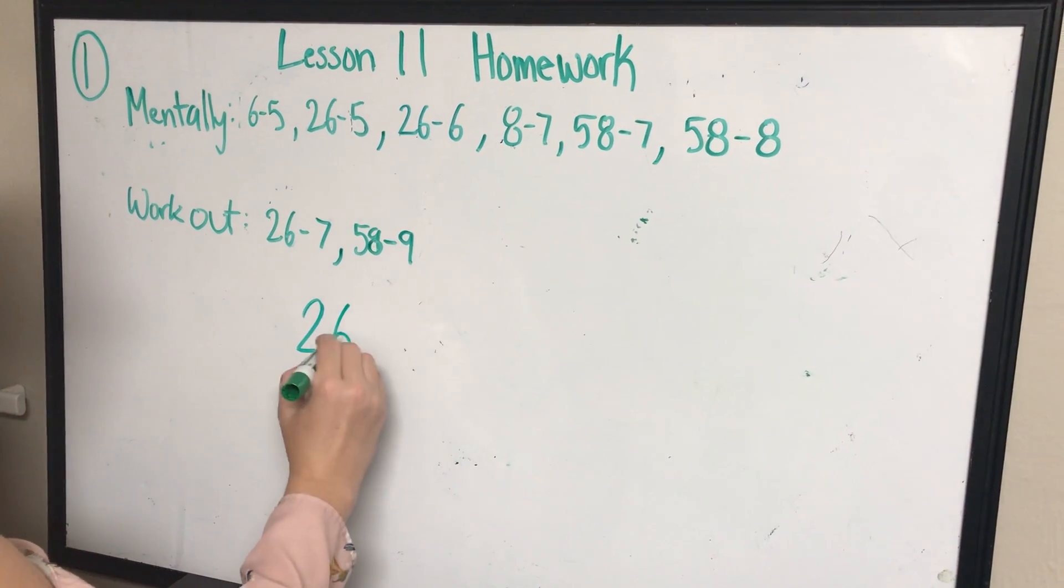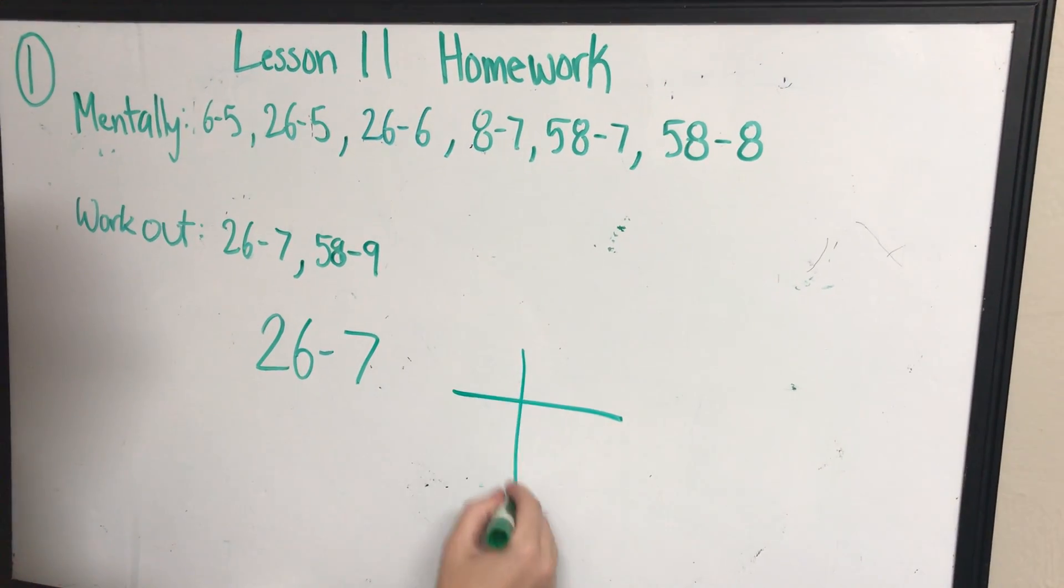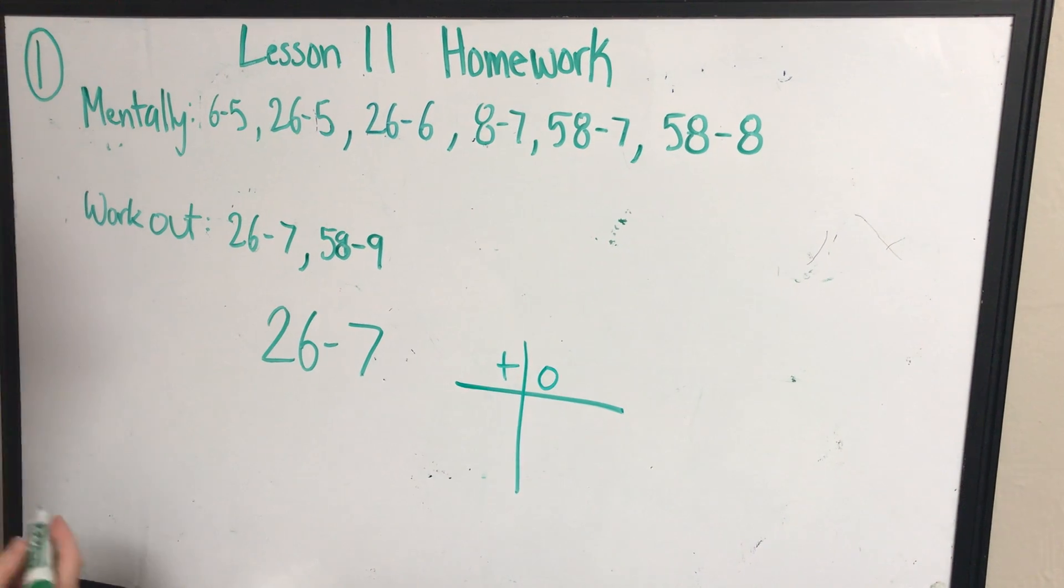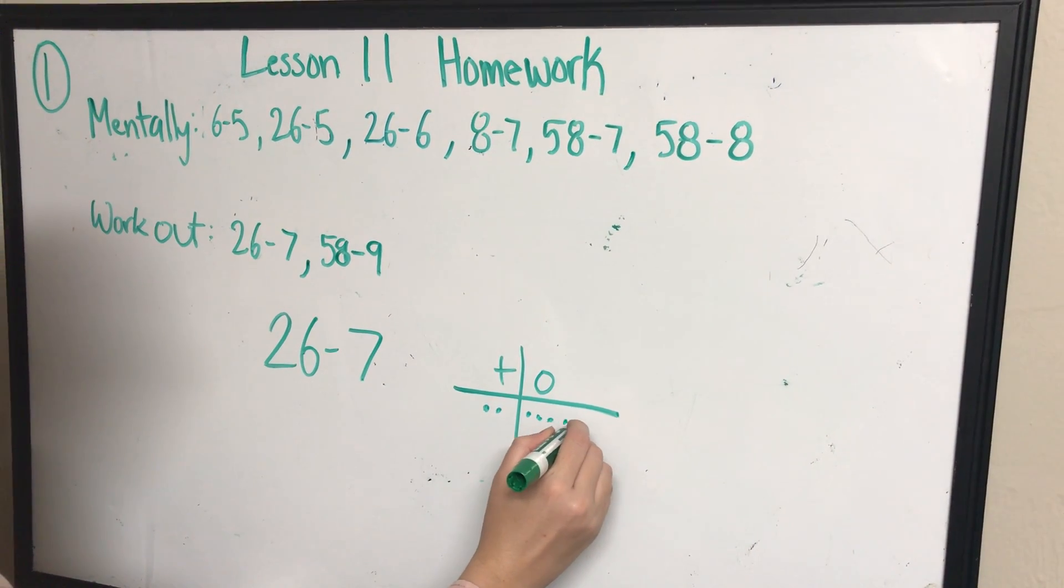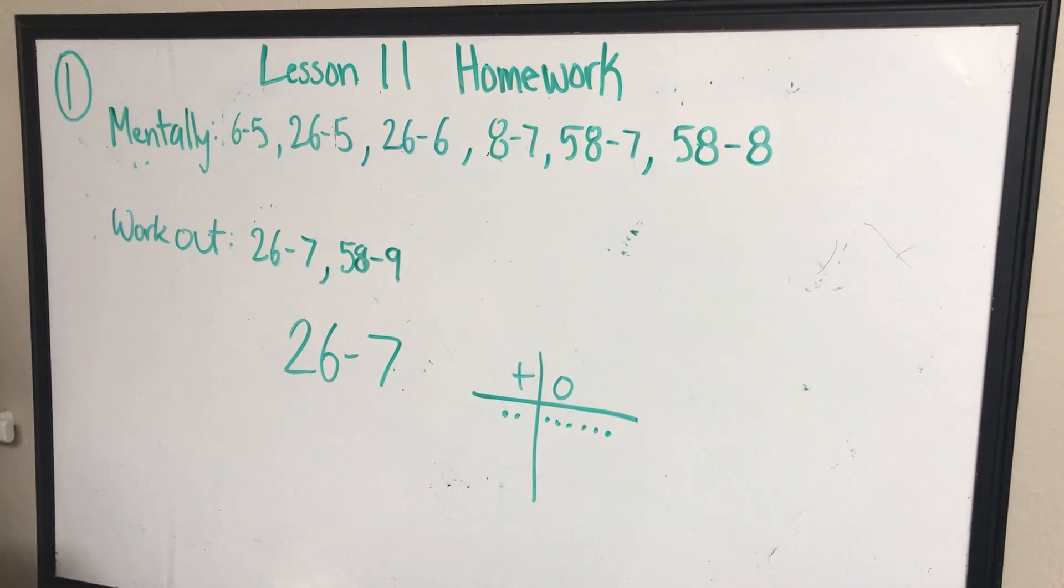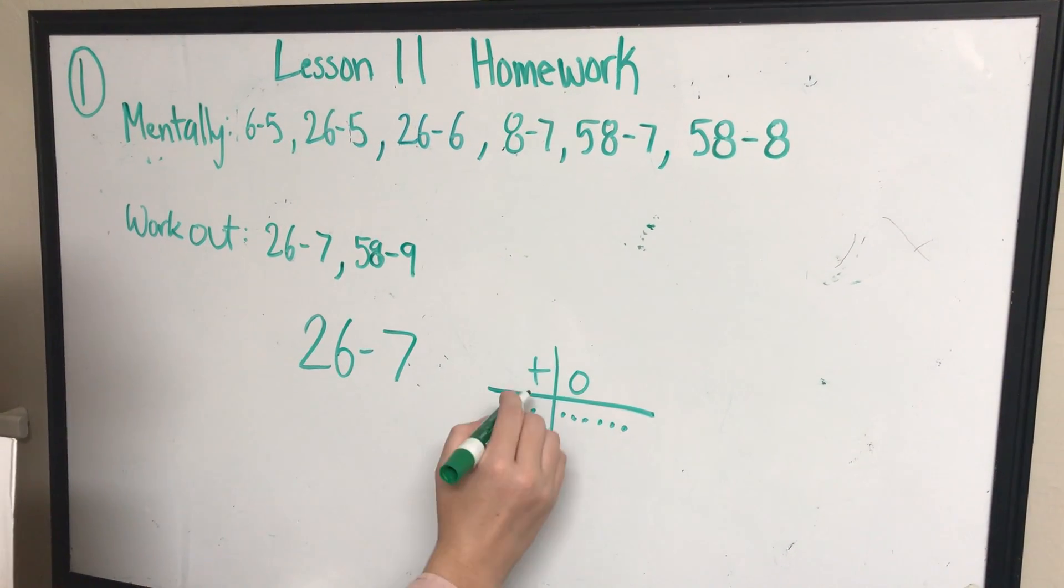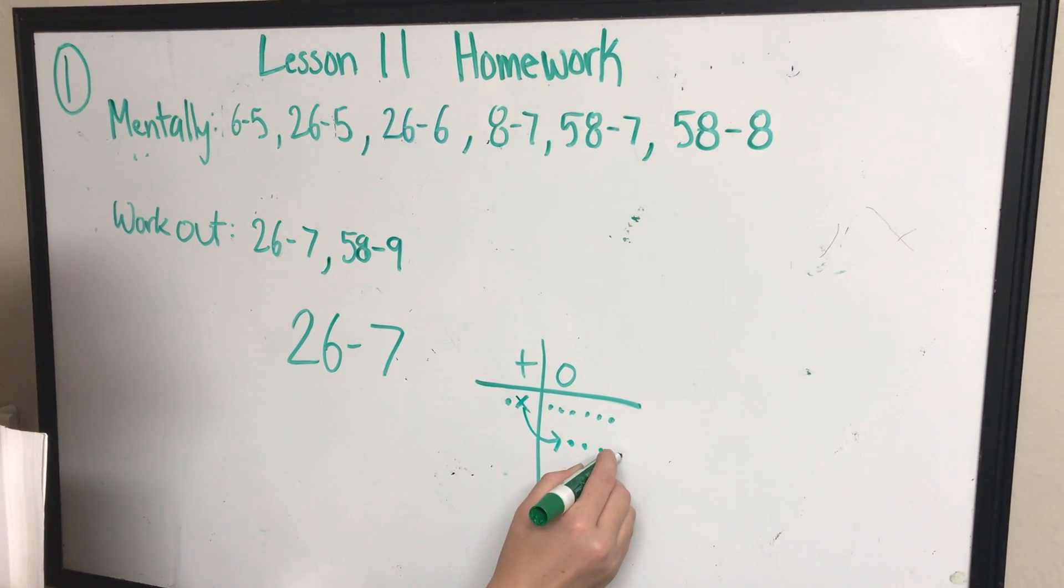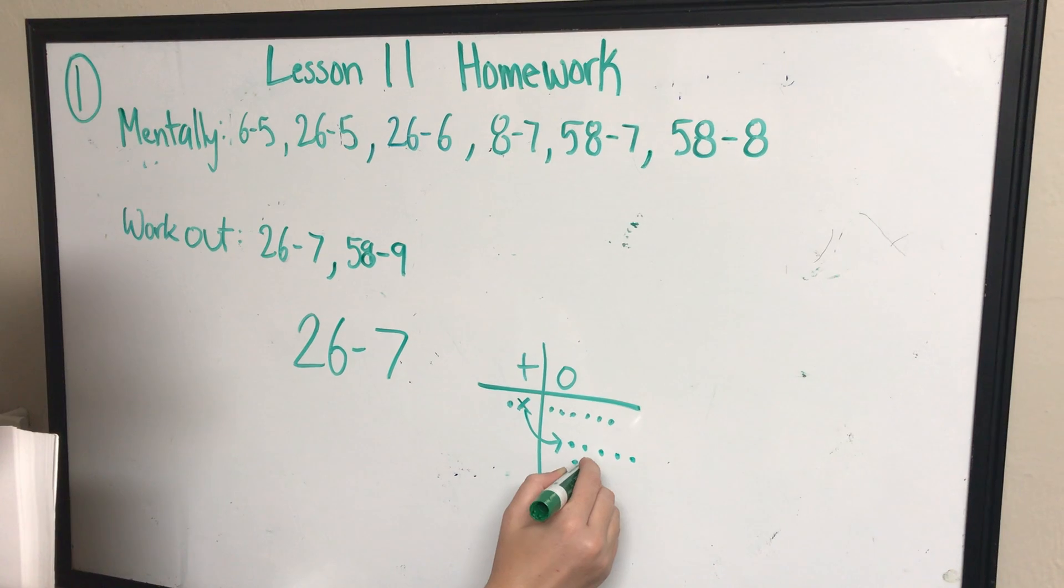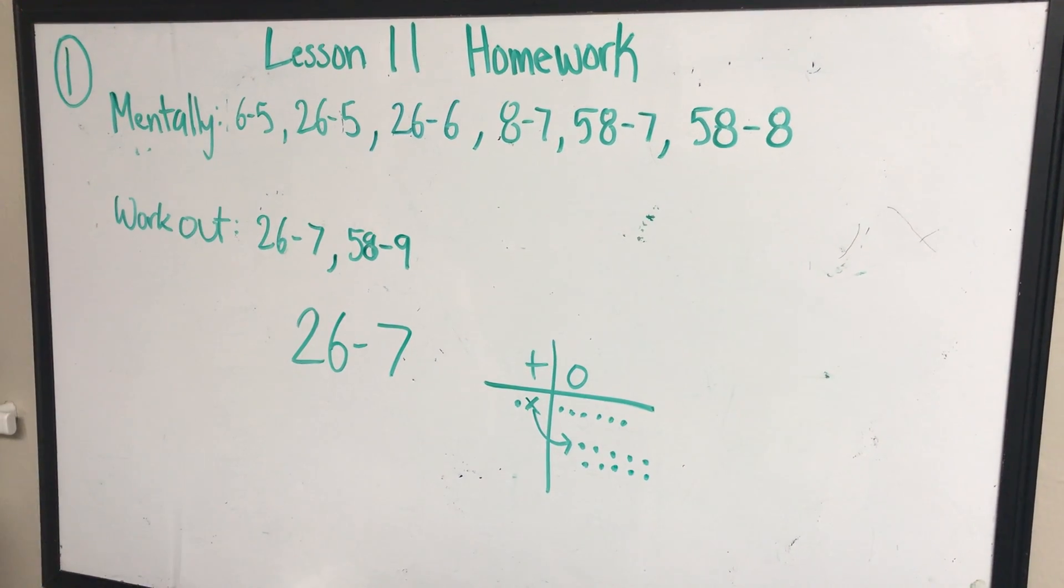So when it says 26 minus 7, off to the side of your paper, really small, you're going to write your little tens and ones chart. You're going to draw your 26. Can I take away seven when I only have six ones? No. What do I need to do? I need to take away a 10, bring it on over, make 10 new ones. Now can I minus seven ones? Yes.